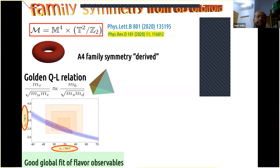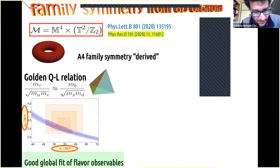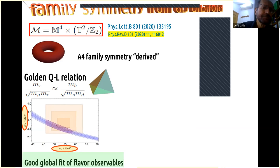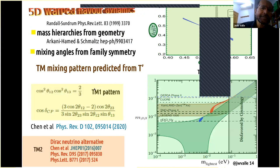I was wondering if S4 symmetry can be obtained with the six-dimensional orbifold, or would one need a different setup to be included? S4 does not emerge in this model — it will be another model. But you can play with S4 in the case of the warped-dimension model, where you can play with any symmetry you want in principle — you just have to check that it is consistent and that the predictions are good.